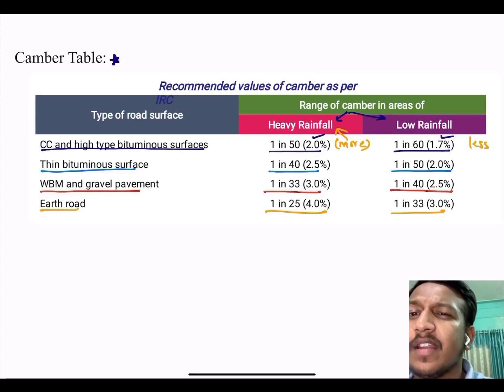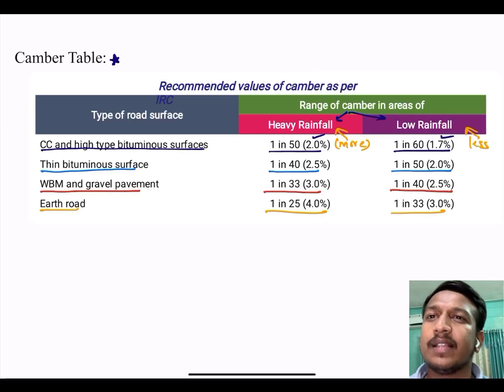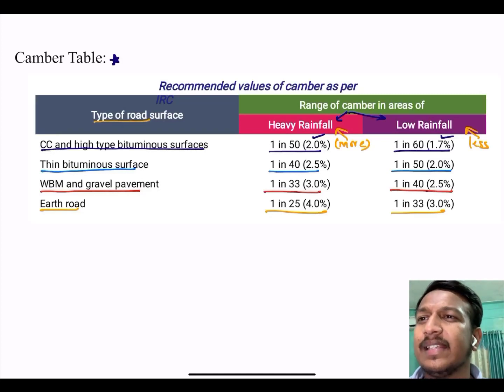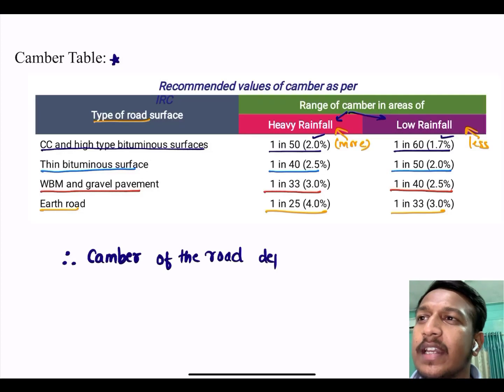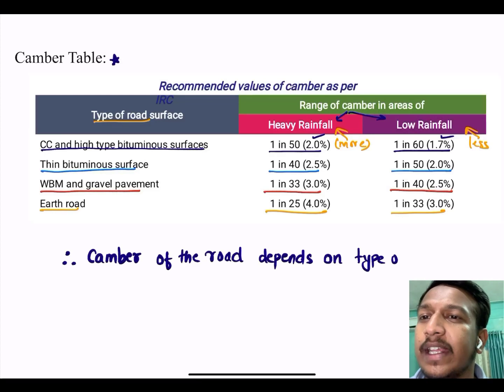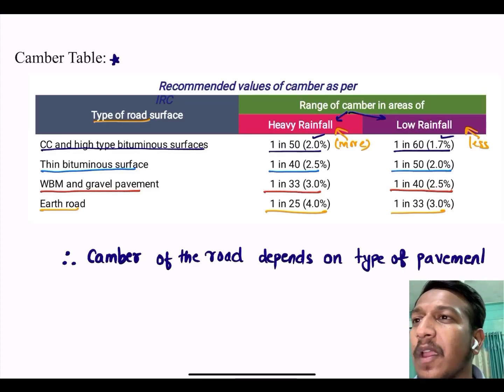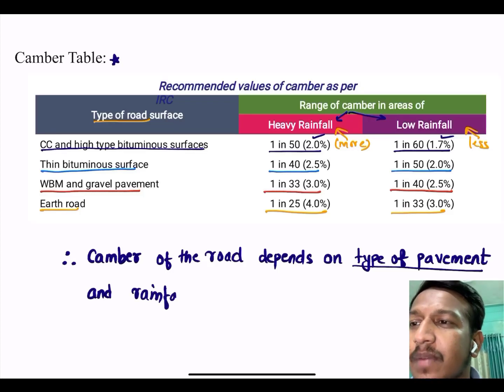If you observe, for heavy rainfall we have more camber whereas in low rainfall we have less camber. And as the quality of the road decreases, the worse quality more the camber and the higher quality lesser is the camber. Therefore, camber of the road depends upon two things: the type of pavement and the rainfall intensity.